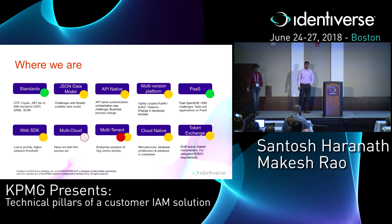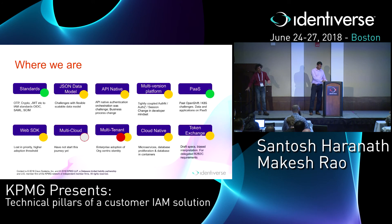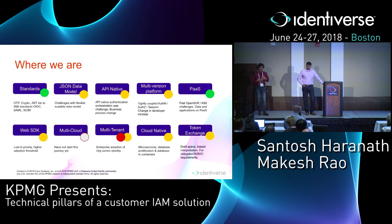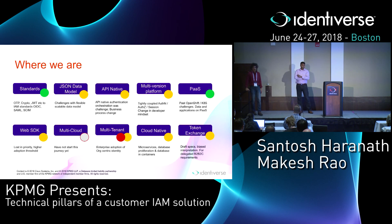In terms of where we are with our capabilities: standards and PaaS are areas where we're comfortable and confident we've done a good job. Multi-cloud is an area where we have not yet started the journey — hopefully by the second half of this year we'll get there. Other areas like API-native and JSON data model are works in progress and show up as yellow or red. Token exchange is another draft specification we've implemented in our own interpretation, and that works for our B2B2C model. That's pretty much where we are with the technology enablers and how they apply to the guiding principles. If you have questions, we'll be around.